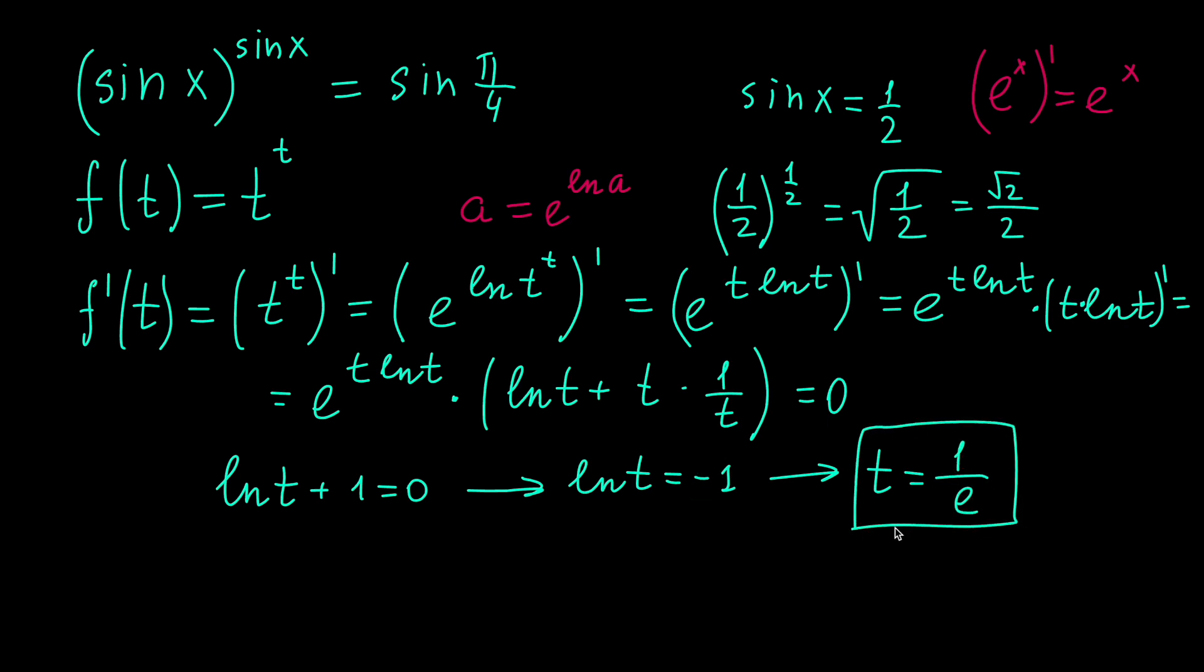So here's our stationary point, and let's determine its nature. I'm drawing a sign diagram of the derivative. Let's put f prime here and the function itself here. Obviously, we will have plus sign for this interval. Let's check it for t equals 10, for example.